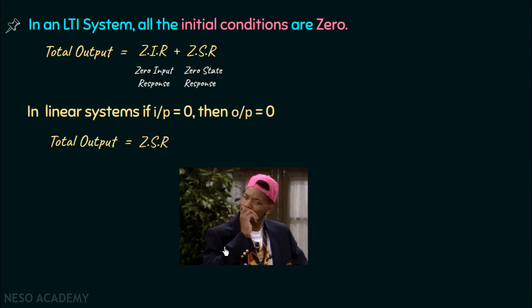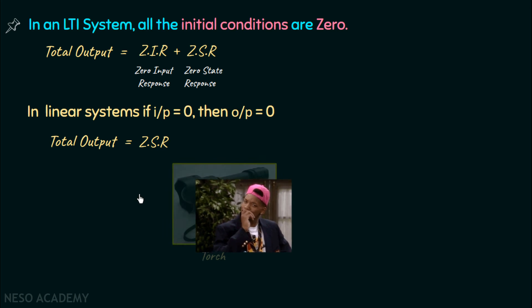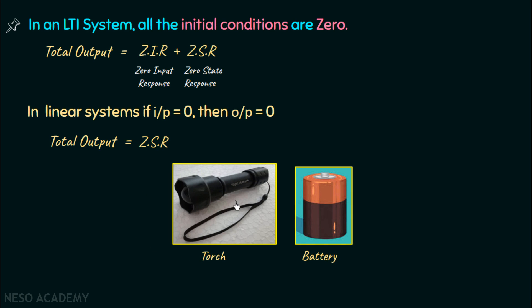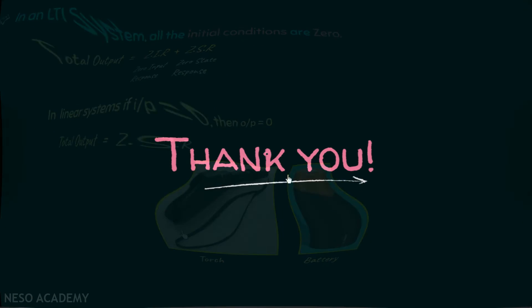To understand how output can exist without input, consider a torch light: the capacitors inside the battery have stored charges, which is the power source for the torch. No external input is applied — the stored charges are the initial conditions providing a zero input response. Input is only applied when we charge the battery. This illustrates how initial conditions produce output without any external input, completing our discussion of LTI systems.